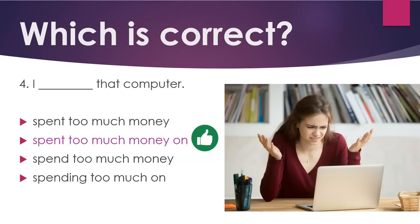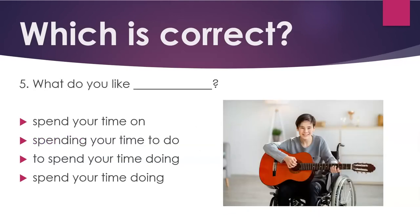Number 5. What do you like? Which is correct? (A) Spend your time on, (B) spending your time to do, (C) to spend your time doing, (D) spend your time doing.